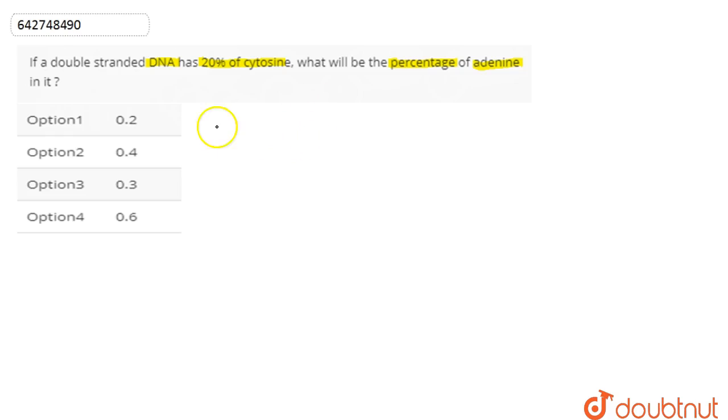According to Chargaff's rule, we are going to solve this question. As per this rule, the amount of adenine is always equal to that of thymine, and the amount of guanine is always equal to that of cytosine. That is, A equals T and G equals C.